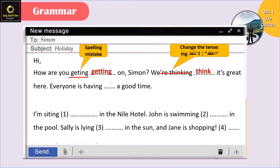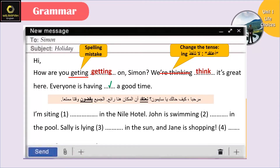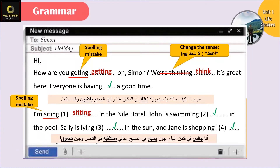كلمة 'أعتقد' ما بتاخد ing، فمنحط بالفراغ 'think'. We think it's a great here. Everyone is having a good time - there is no mistake here. I'm sitting - we have a spelling mistake, the word 'sitting' with a double t - in the Nile hotel. John is swimming in the pool, Sally is lying in the sun, and Jane is shopping.